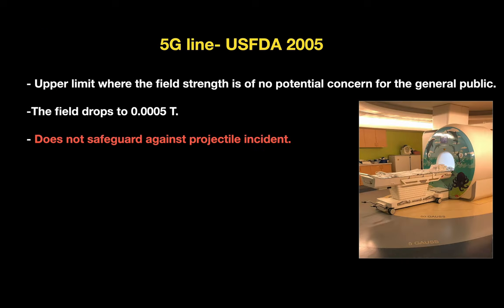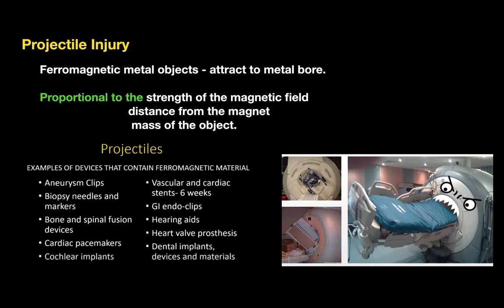There is a concept called the 5-Gauss line, given by the US FDA in 2005. This line is the upper limit where the field strength is of no potential concern for the general public, but it does not safeguard against projectile incidents. This line represents a field drop of about 0.0005 tesla.